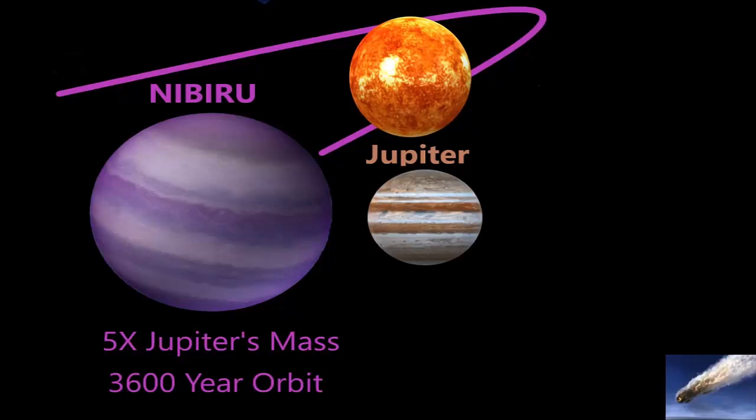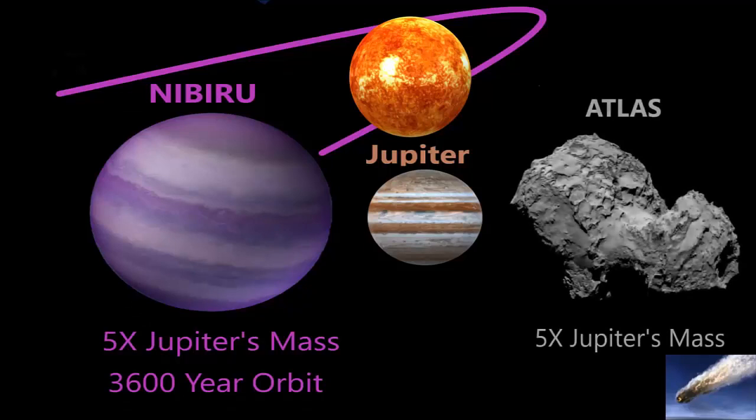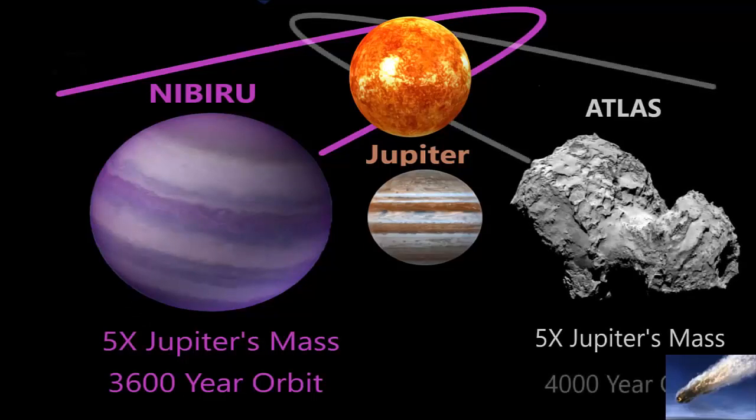These determinations are in line with those of Atlas, a great comet that is five times that of Jupiter, with an orbit around the Sun every 4,000 years.